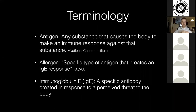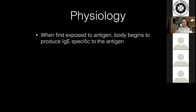Immunoglobulin E — IgE — is basically an antibody that your body creates when it starts to perceive a threat. It's the same idea as immunity to a disease: once you've been exposed to chicken pox, your body creates antibodies to fight it off in the future. With allergic reactions, the body is exposed to an antigen and creates IgE specific to it — even though it's not something the body actually needs to be worried about. IgE is most notably useful for fighting off protozoic infections, but here we're exploring how it affects the body in allergic reactions.